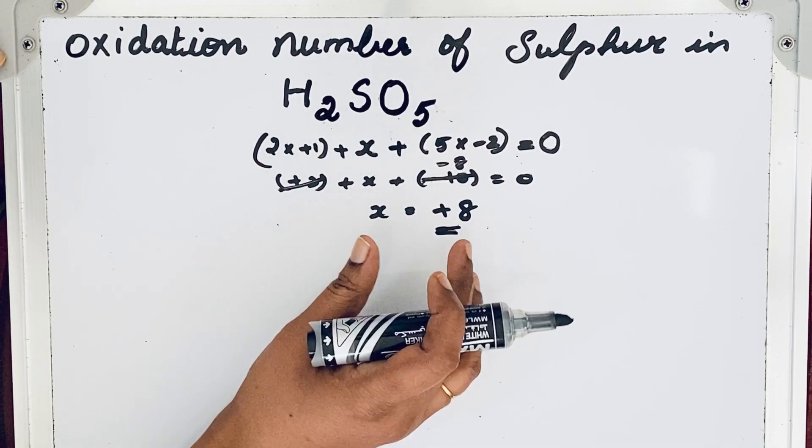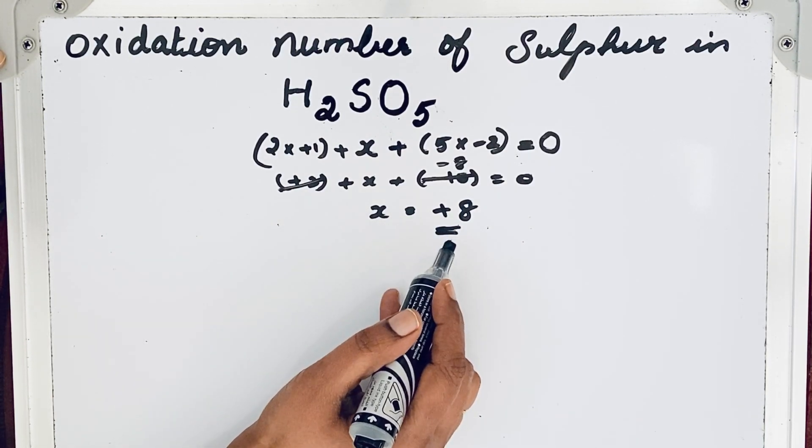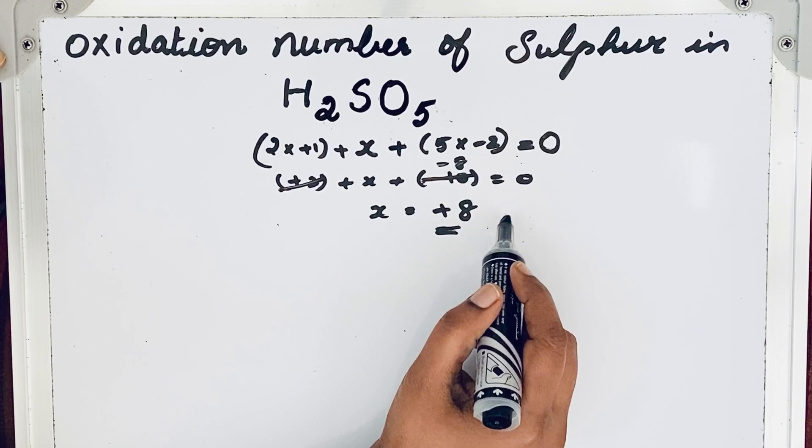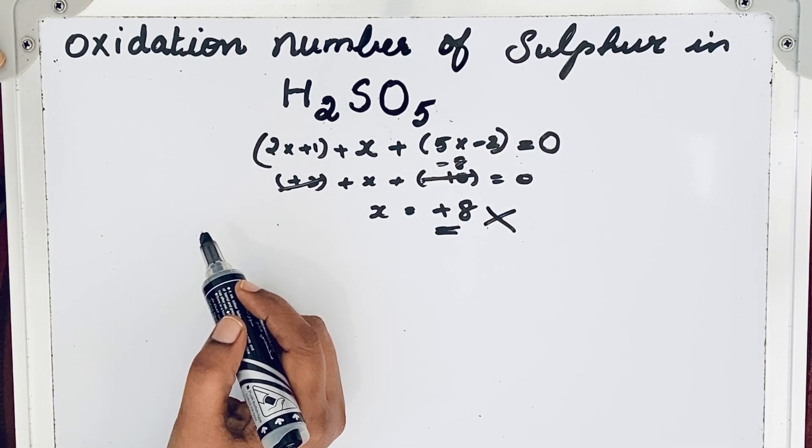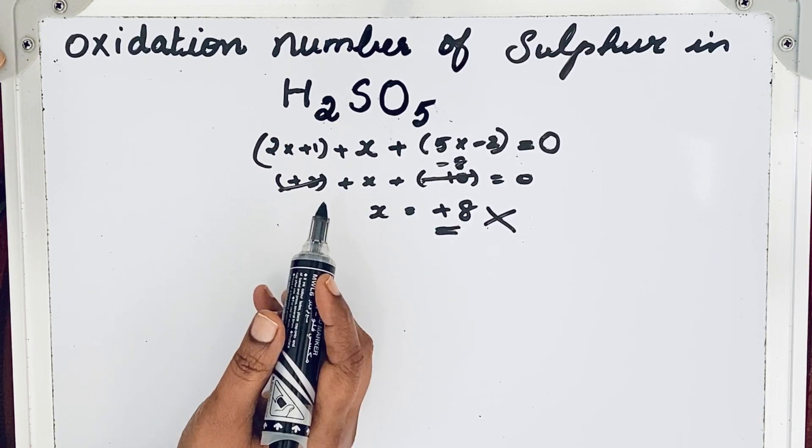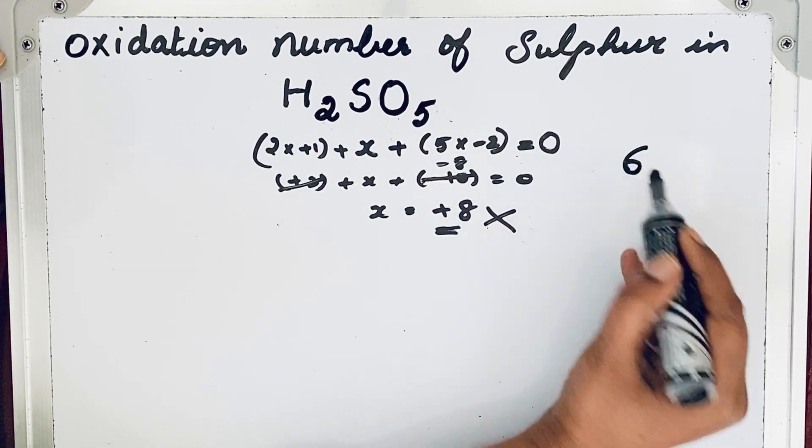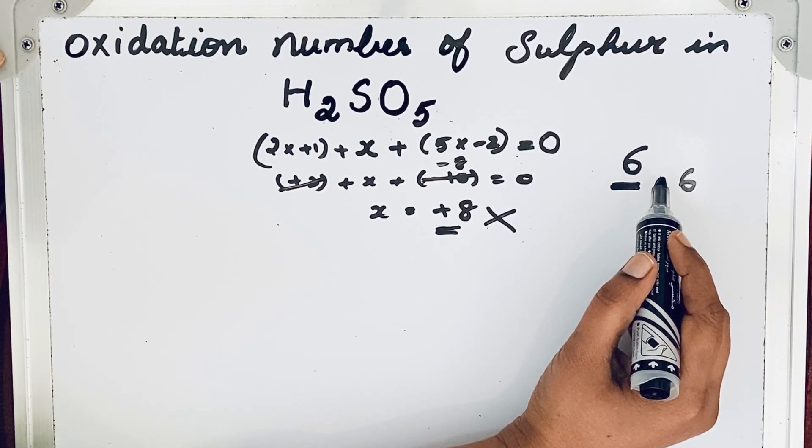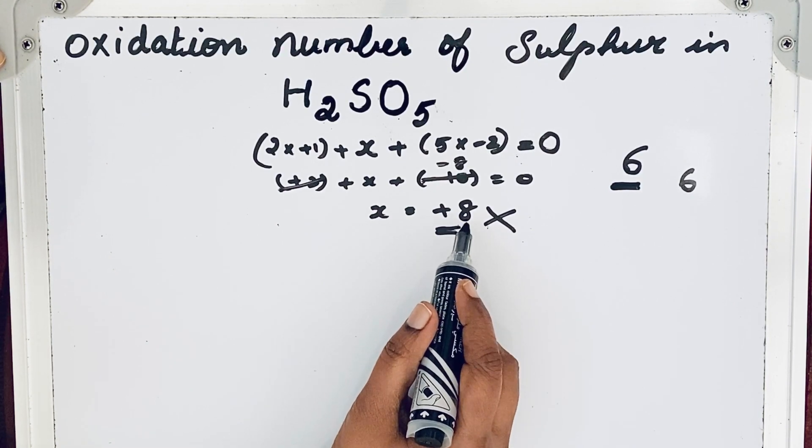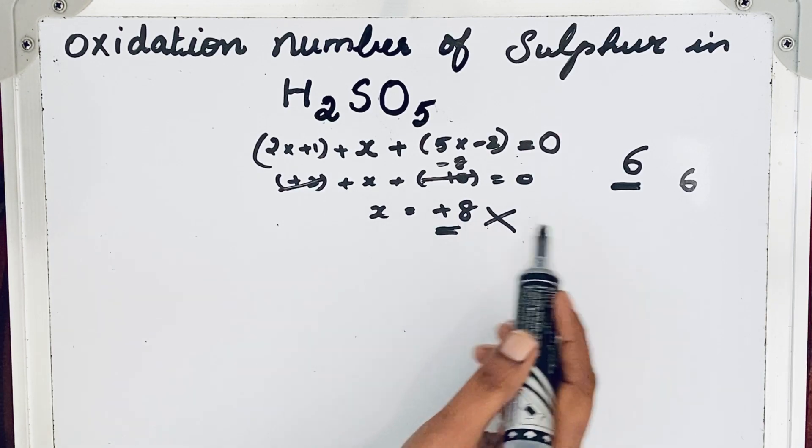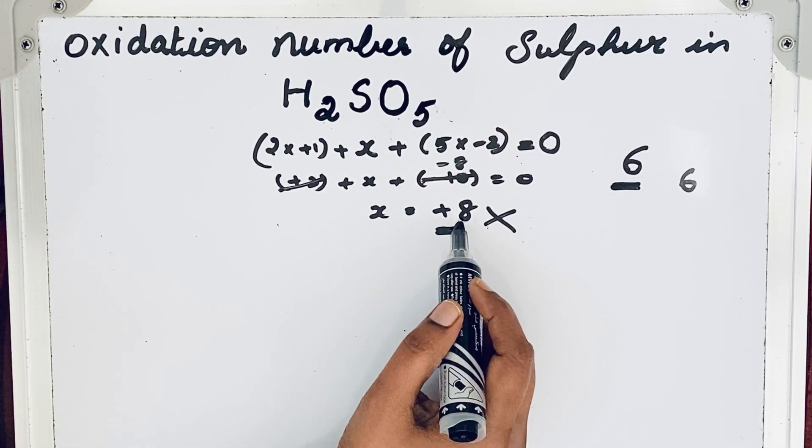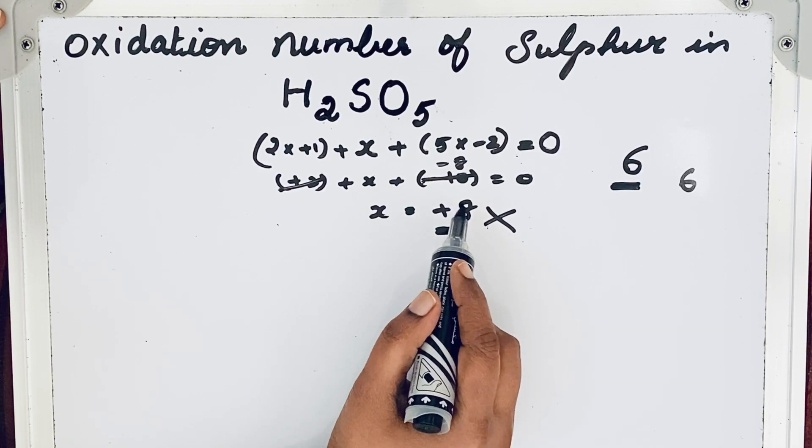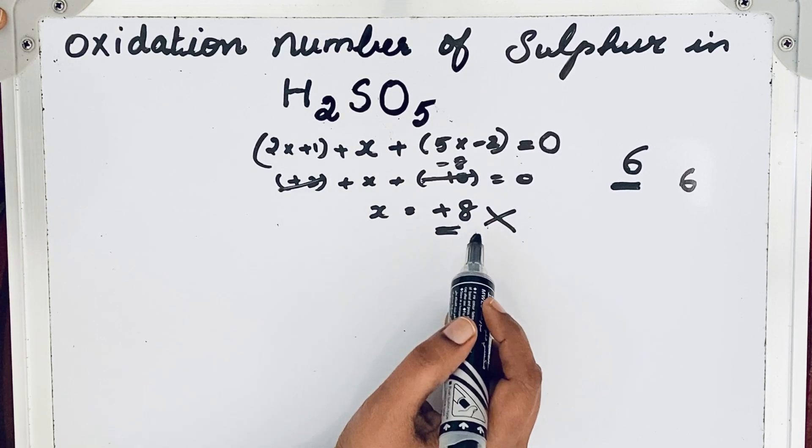So according to the general rule, oxidation number of sulfur in H2SO5 is plus 8. But this is not right. Why? You know, sulfur is in 16th group, so valence electrons of sulfur is only 6. It means sulfur can make only 6 bonds, only 6 electrons can involve in bond formation. But here, plus 8 means 8 electrons are lost. When 8 electrons are not available in sulfur, then how can it give 8 electrons? So here there is a logic, isn't it? So this general method of finding oxidation number of sulfur for this particular compound is wrong.